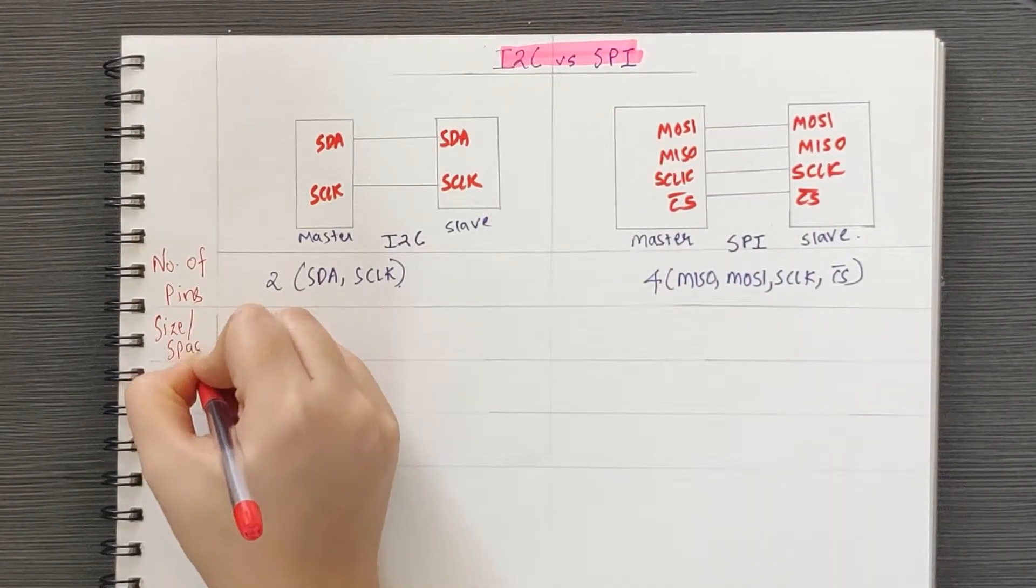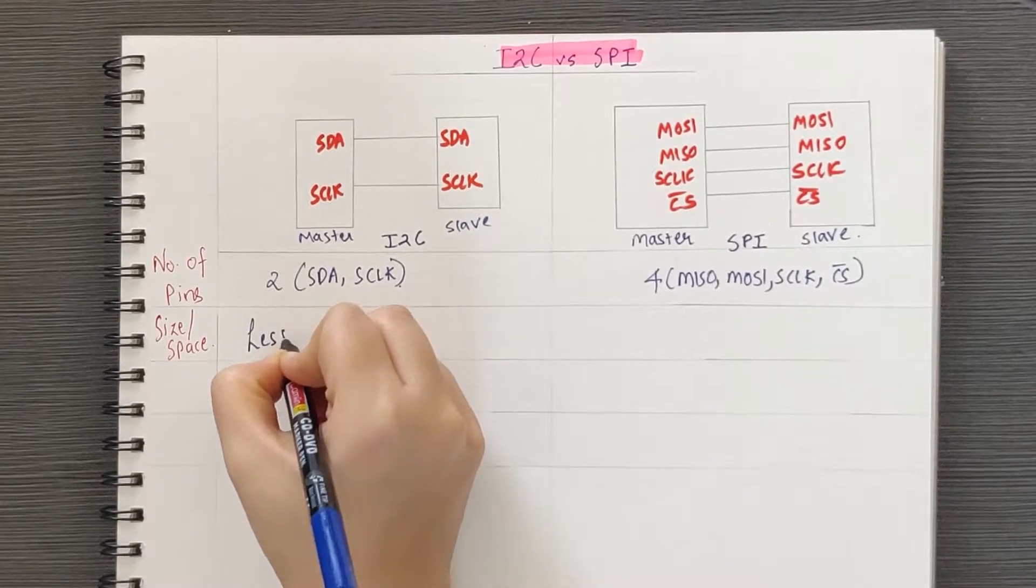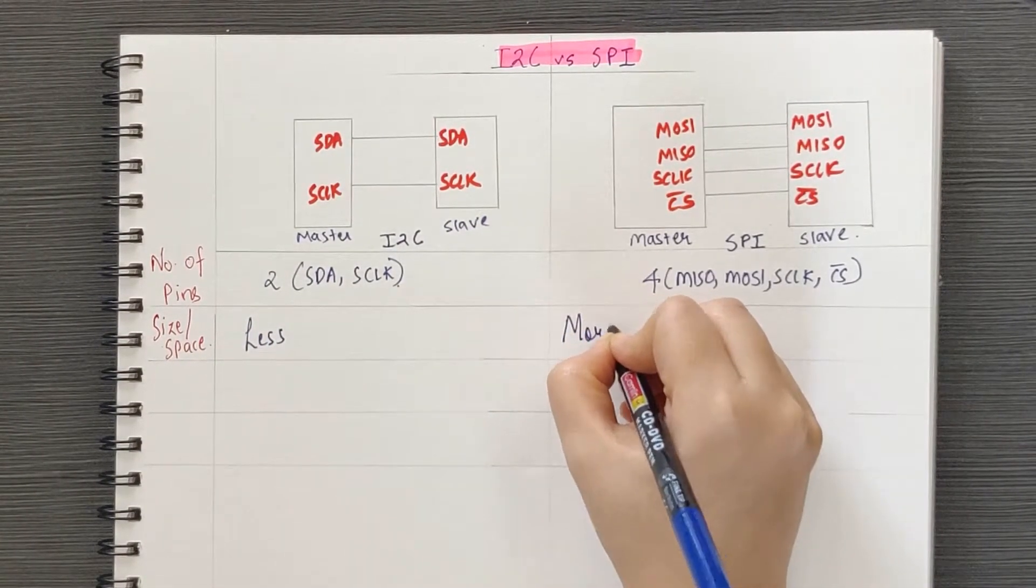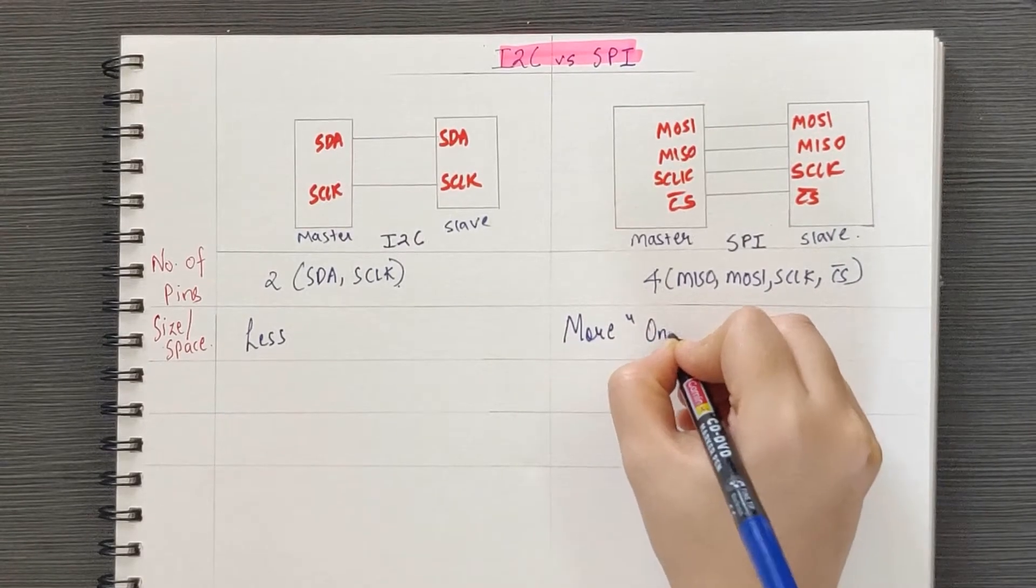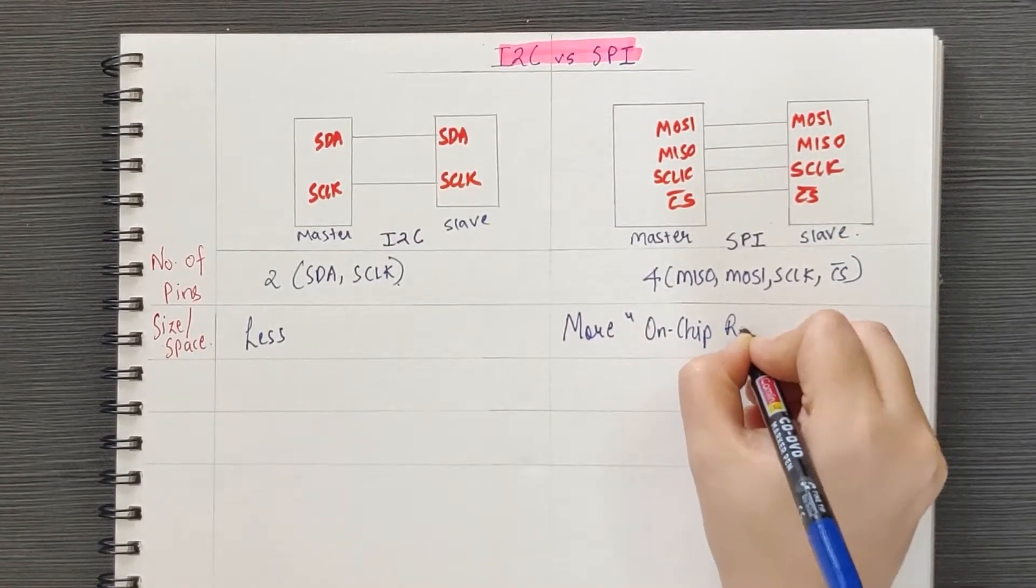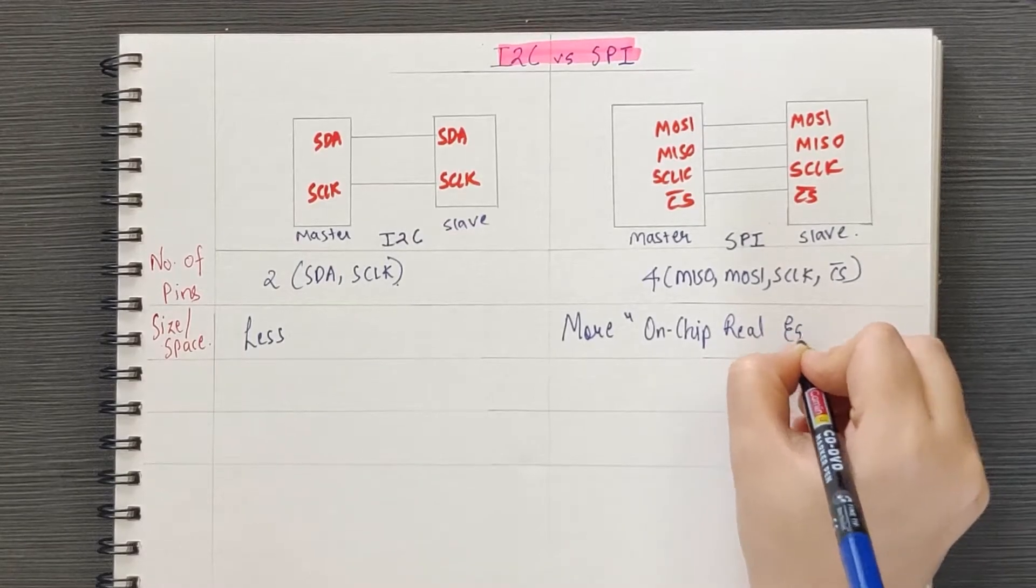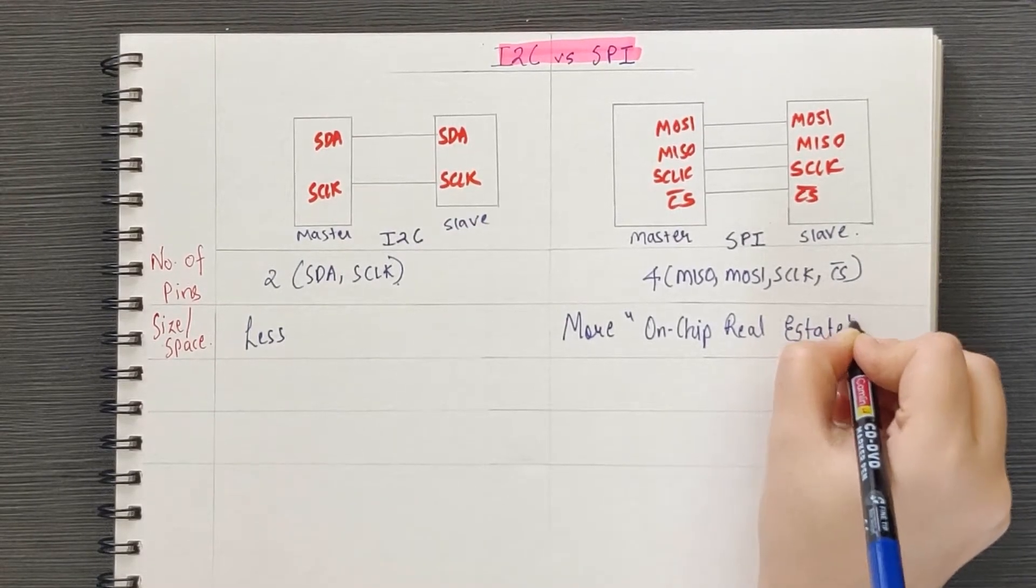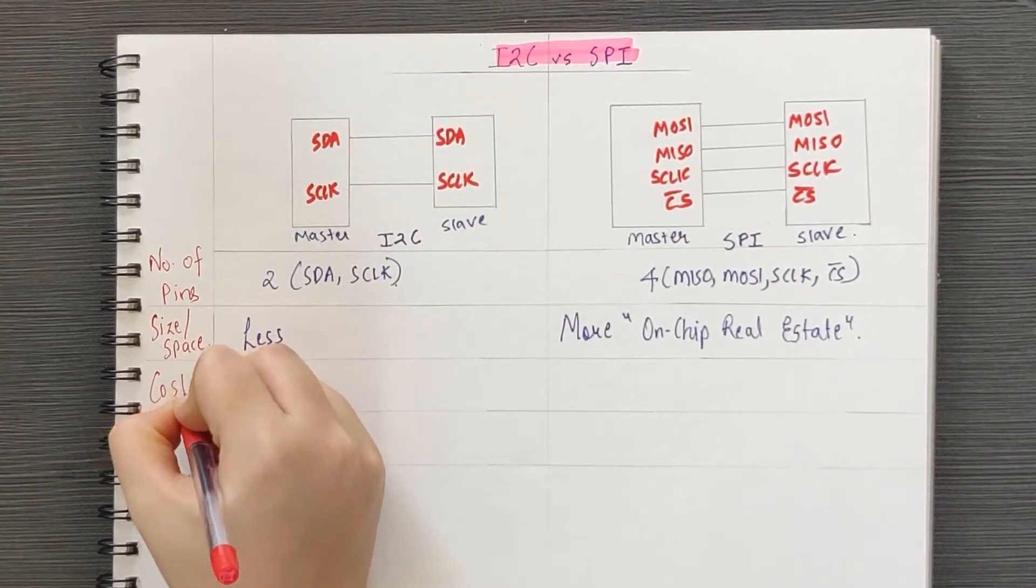There are direct implications of this major difference. First, the on-chip real estate will be less for I2C due to less number of pins as compared to SPI, which means that I2C can be implemented at low cost as compared to SPI. So we already have three differences.